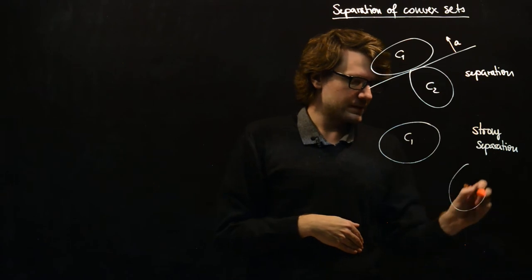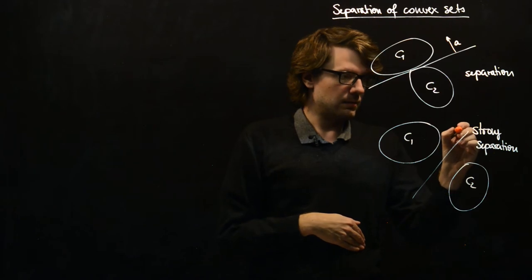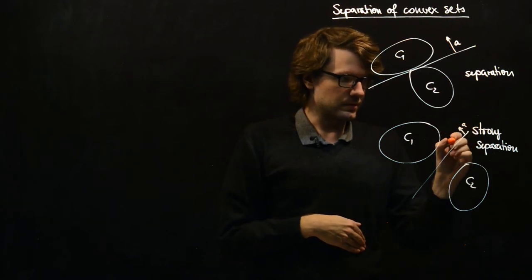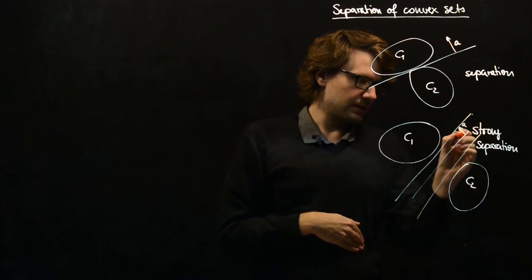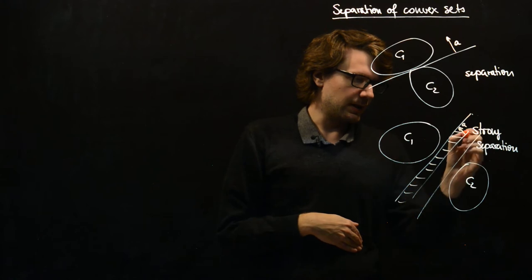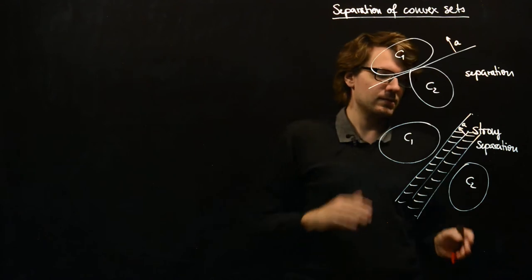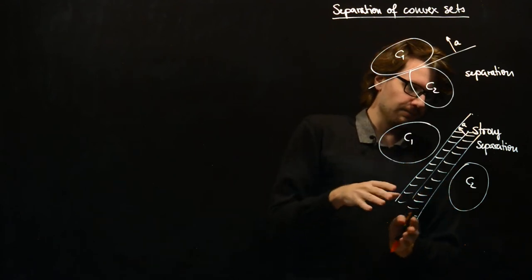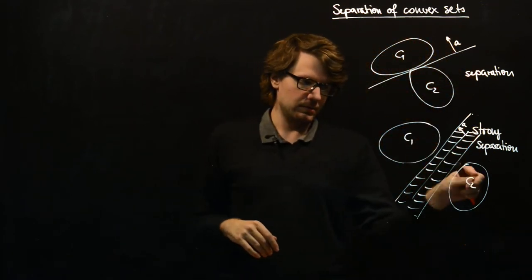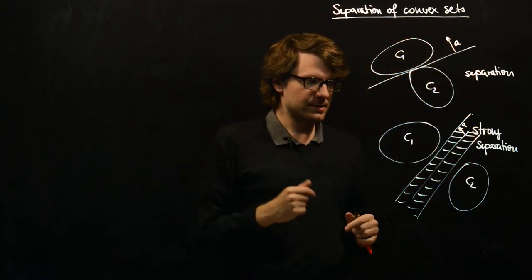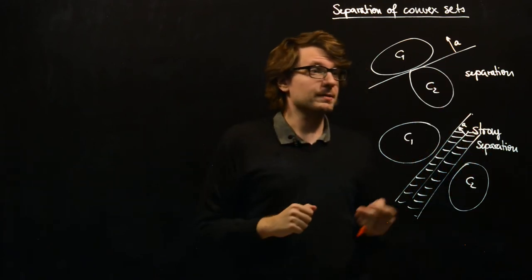Another case will be strong separation and this is as follows. We are given two convex sets and we want to find a hyperplane with a certain normal vector such that we can find space around the hyperplane which is not occupied by any of these sets. So we can basically put a sandwich in between and we will still not touch these sets.